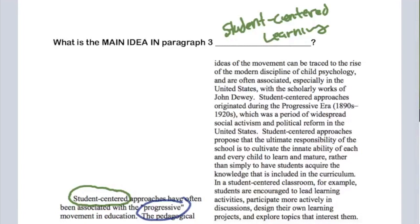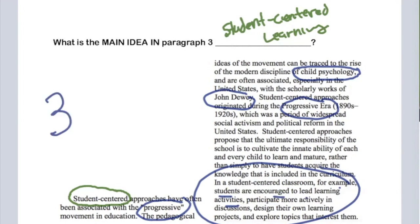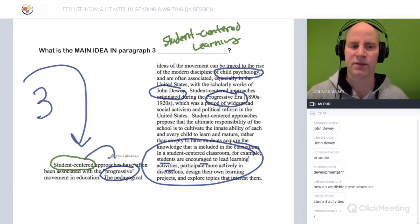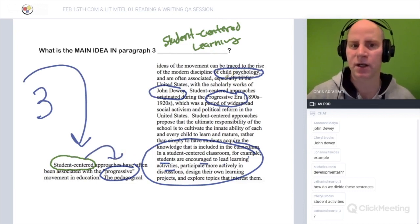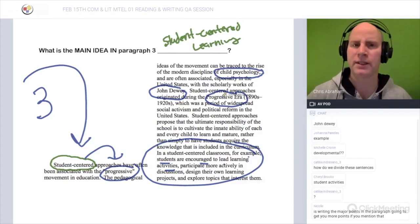You have to include those in your summary — those are coming directly from the text; you're restating something from the text. Any other words or phrases that stick out? I think you'd want to talk about John Dewey and the progressive era. Something on student-centered activities — students are encouraged to learn through activities. So paragraph three would be about student-centered activities, this progressive approach to learning, and it involved child psychology. You could have a sentence on John Dewey and a connection to progressive. You want to boil it down to two or three sentences.